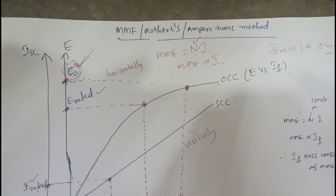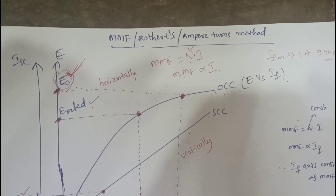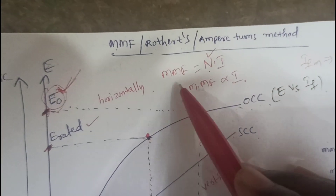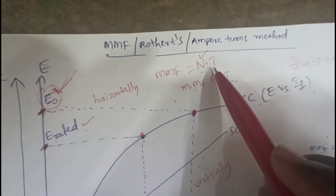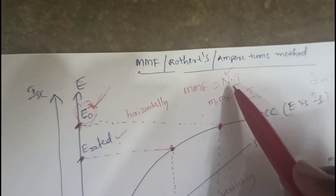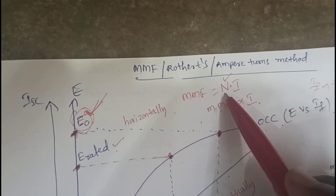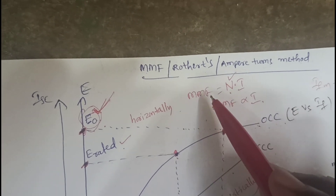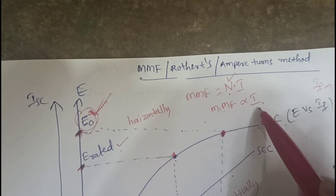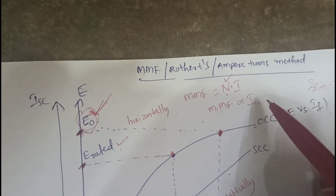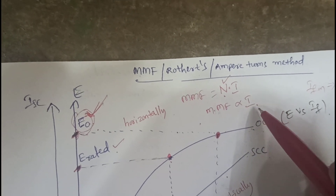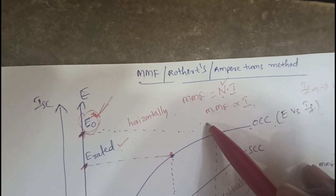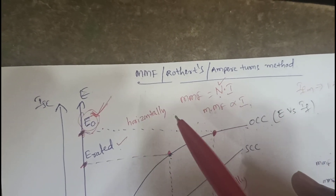MMF means magnetomotive force. We have a basic formula: the MMF unit is Ampere Turns, where Amperes means I and Turns means N. If we assume the number of turns are constant, then MMF is directly proportional to the field current. This proportionality between field current and MMF is the main concept of this method.